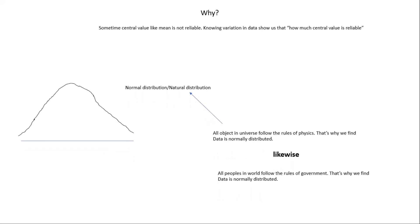Likewise, all the people in the world follow the rules of government. That's why you find that data is normally distributed. If this were false, you would find lots of crime in the real world, but most of the people follow the rules, right?